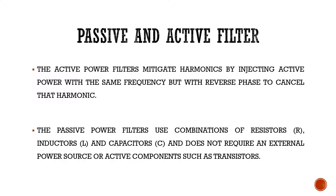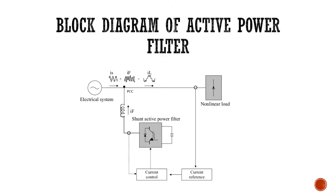Most commonly, active filters are used nowadays for harmonic compensation. This is the general block diagram of the active power filter. We can see here a generating system — that is the electrical system — which generates the power given to the system or the grid. The major source of harmonics in the system is the non-linear load, which causes harmonics in the grid. We need to compensate the harmonics caused by the non-linear load. For this purpose, we are getting the current reference from the load side.